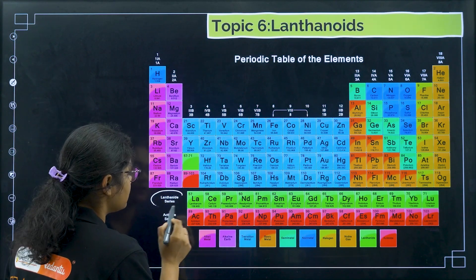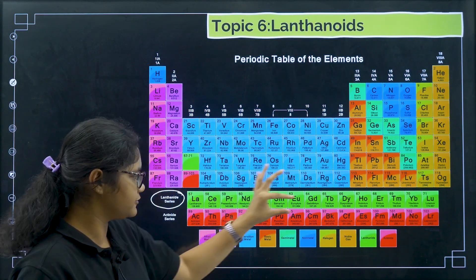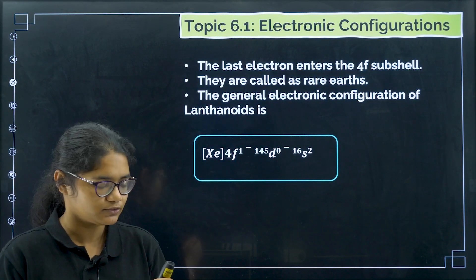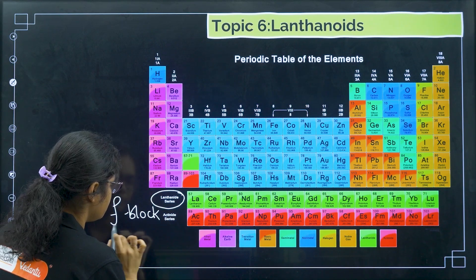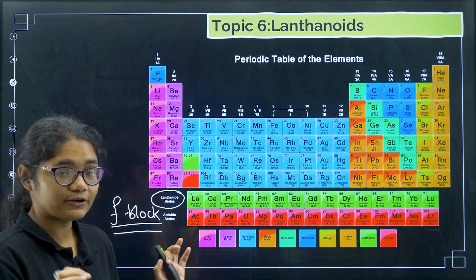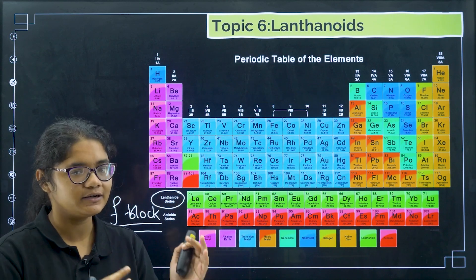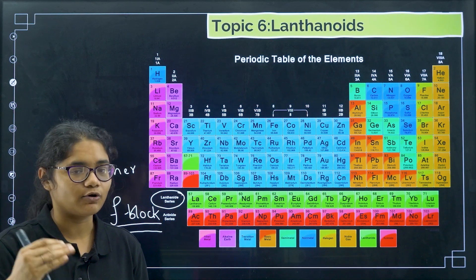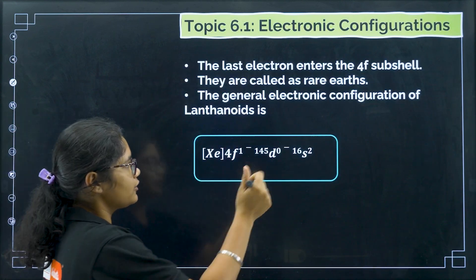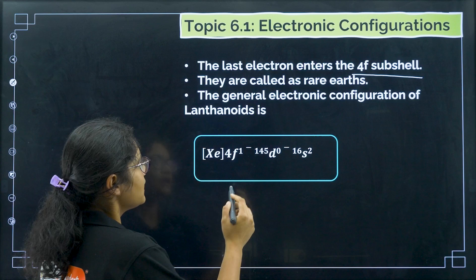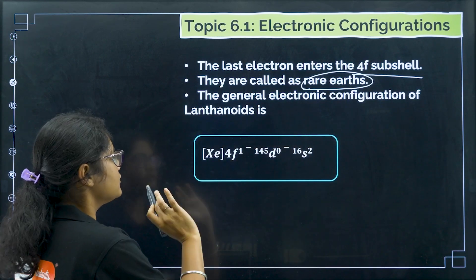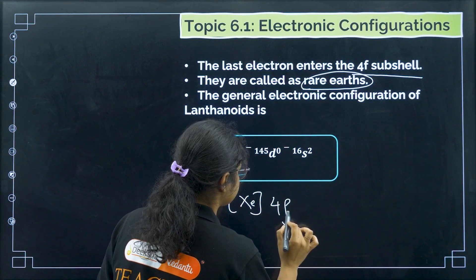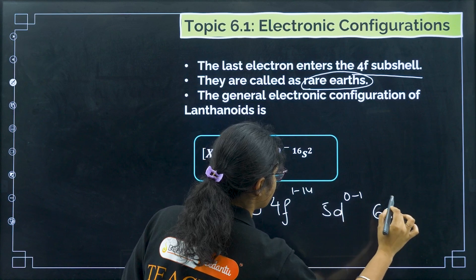You can see the periodic table — the first green color series below the periodic table is called the lanthanide series. Lanthanides belong to the F block, meaning the last electron enters the 4F subshell. These are called inner transition elements. If the last electron enters the 4F subshell, it is called lanthanoids — also called rare earth metals because they are found very rarely on Earth. The general electronic configuration is [Xe] 4f¹⁻¹⁴ 5d⁰⁻¹ 6s².